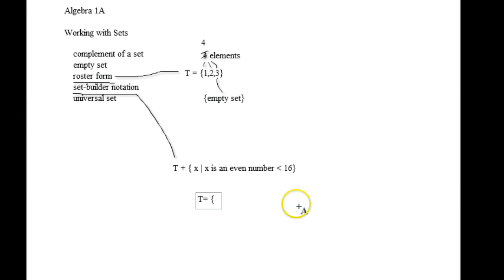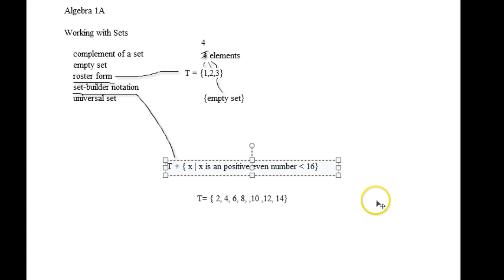And that way you can build your roster form from that. You can say, oh, T is 2, 4, 6, 8, 10, 12, 14, and you can't include 16. We probably should also say, just to be exact, is a positive even number less than 16.